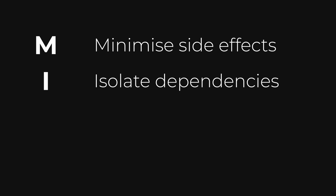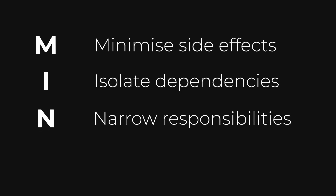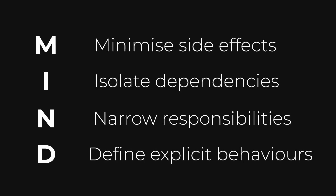The M stands for Minimize side effects — functions that behave predictably every time. The I stands for Isolate dependencies — code that doesn't depend on external services. N stands for Narrow responsibilities — each piece does one job exceptionally well. And D stands for Define explicit behaviors — no mystery when you look at the code; you know what to expect.